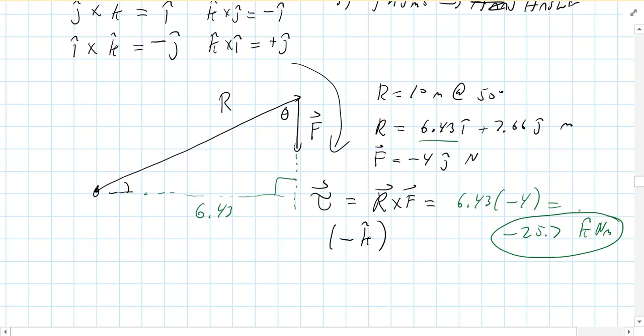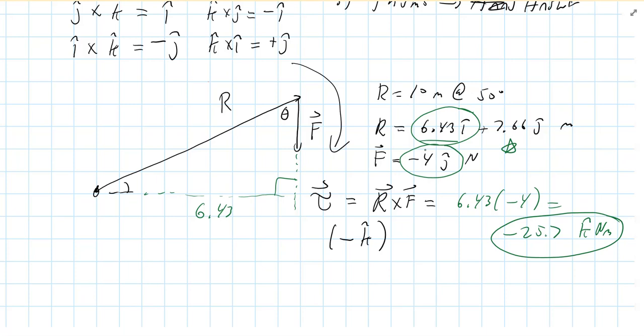Notice we didn't use the 7.66 j-component of R. We multiplied the i-component of the radius by the j-component of the force. This is different from dot product, where you multiply like directions. In cross product, you multiply unlike directions, because cross product measures how perpendicular two vectors are.